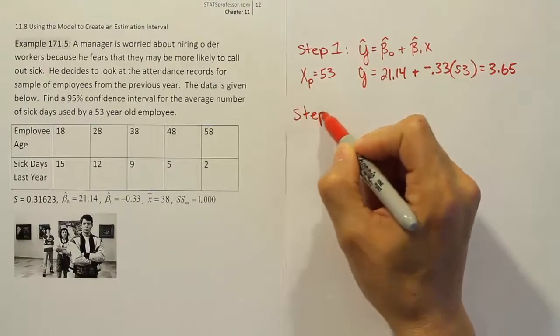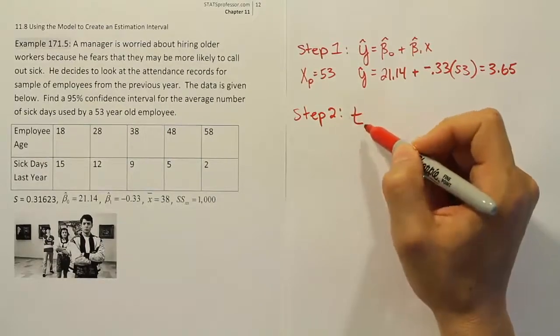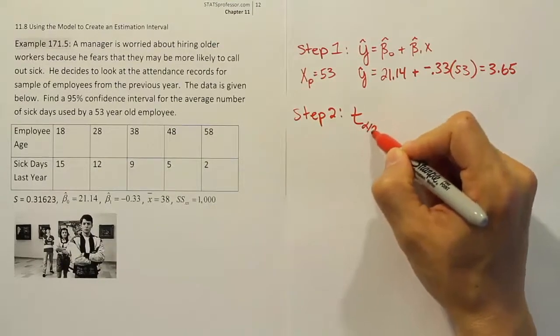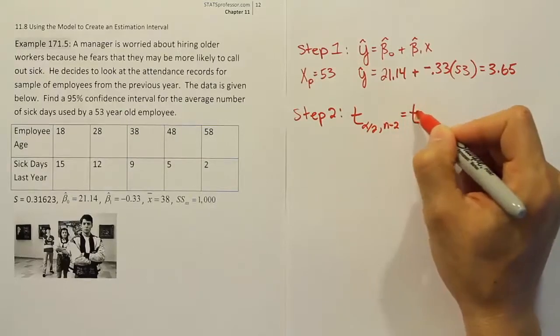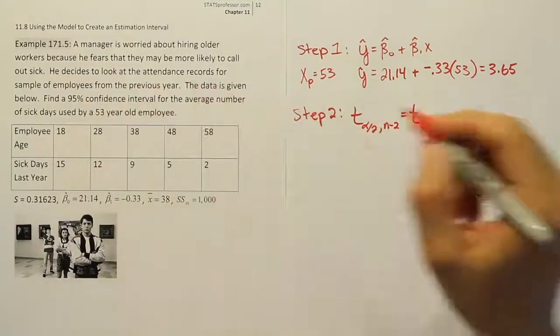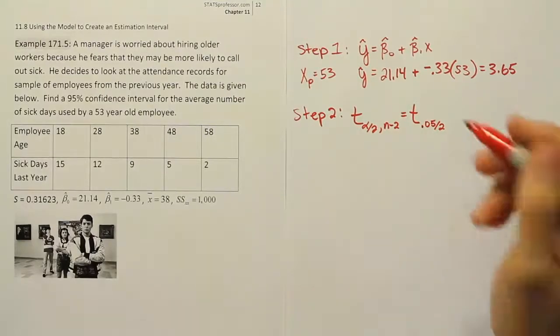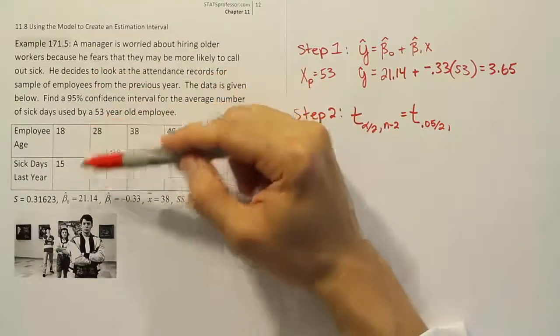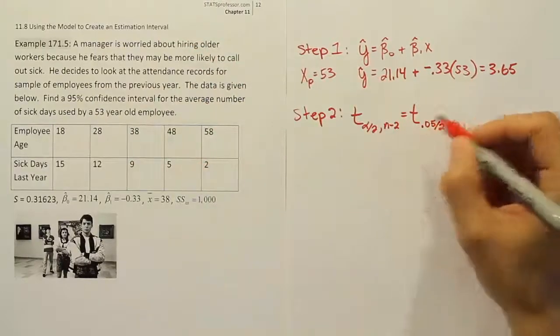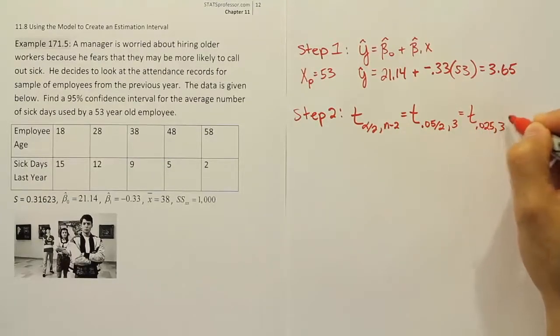Let's go on to step 2. Step 2 is where we normally get our table value from, our critical value. In this case, it's going to be a t value because we have a small sample size. It's t alpha divided by 2, and it has a certain degrees of freedom. That degrees of freedom is n minus 2. The alpha here, since it's a 95% confidence level, is a 5% alpha, so 0.05 divided by 2. The degrees of freedom is n minus 2. The number of paired values we have here is 5. If you take away 2, you get 3. Ultimately, we're looking for the t 0.025, 3 value from our t table.